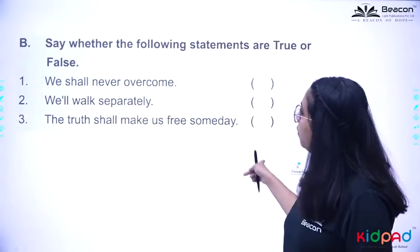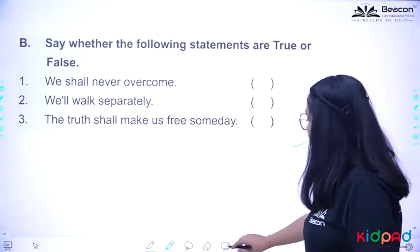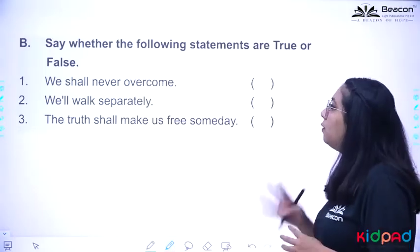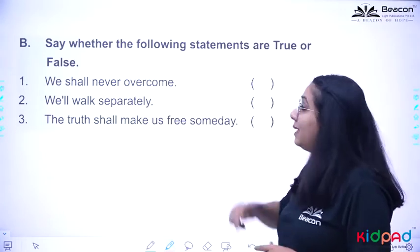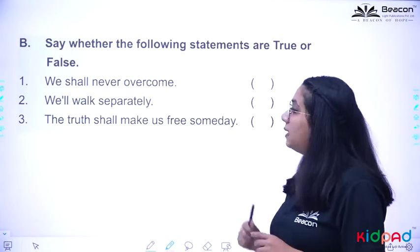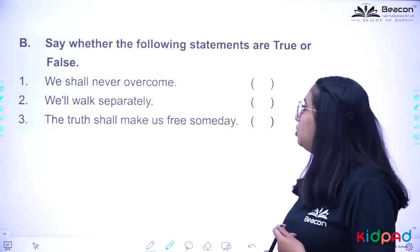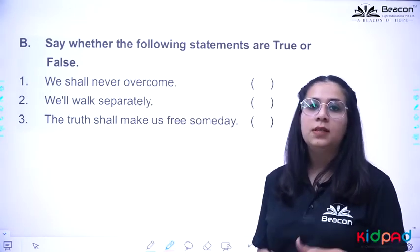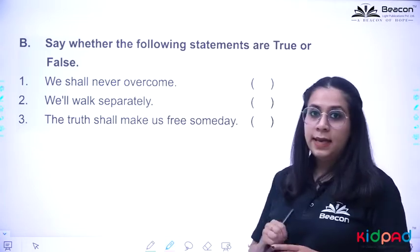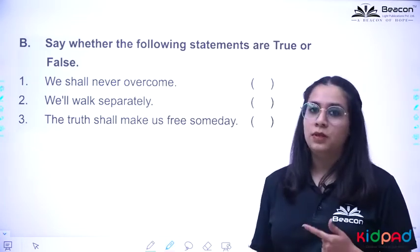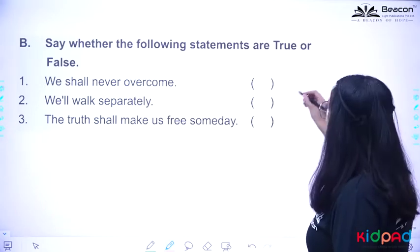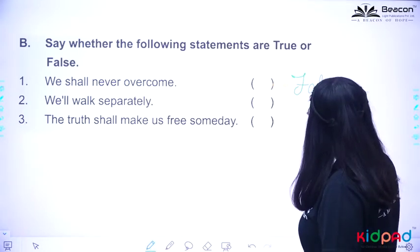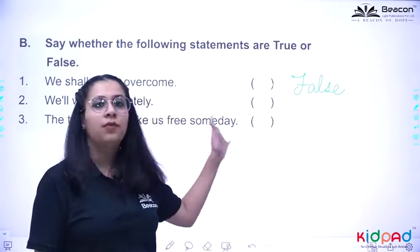The next question is homework for you. Now let us solve the next exercise: say whether the following statements are true or false. First statement given is: 'We shall never overcome.' The poet was saying we shall overcome — we should overcome our problems and difficulties. So this statement is false. Correct answer: false.